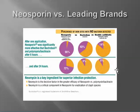According to this graph, Neomycin is the key ingredient for superior infection protection, meaning that's the main chemical that kills the bacteria out of all the active ingredients in Neosporin.